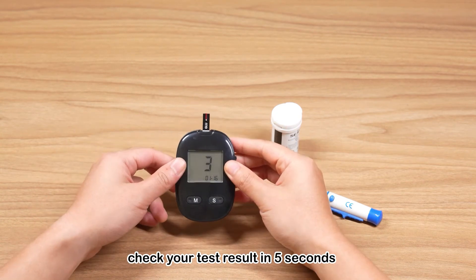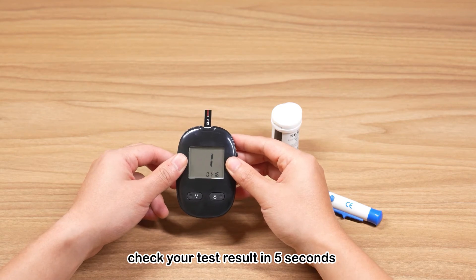Wait for five seconds and check your blood glucose test result along with the date and time of the test. Tests will be automatically stored in your meter.